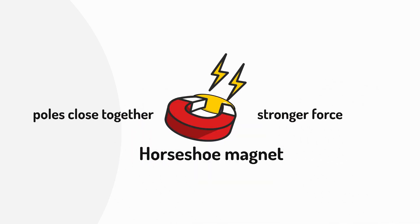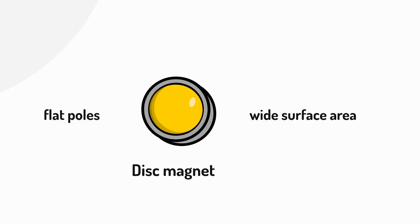Disc magnets are flat with wide poles, and this makes them strong for attracting flat objects like fridge doors and speaker parts.